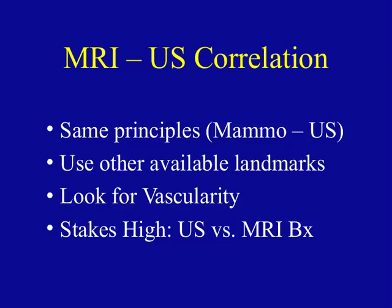When correlating ultrasound with MRI, we use the same principles as with mammography, but you often have additional landmarks available on MR. You may have an adjacent cyst, or if you're doing staging MRI for a newly diagnosed breast cancer, you may have the known cancer as a landmark. You can find that landmark and say the enhancing mass is two centimeters medial to this two centimeter cyst — that's where I'm going to guide my ultrasound.